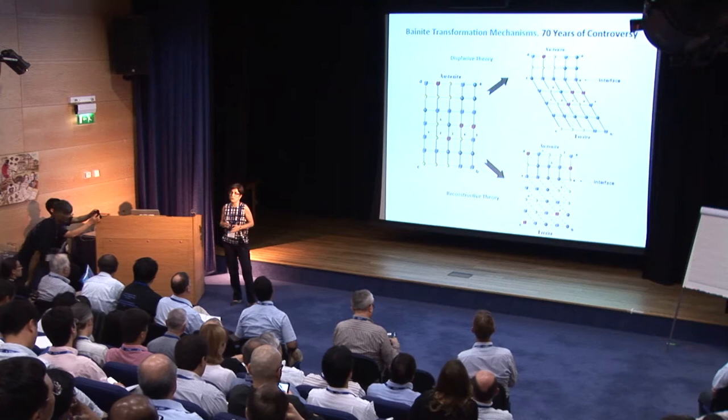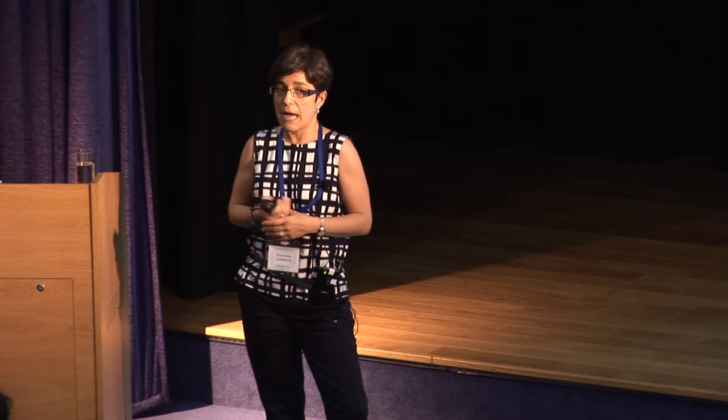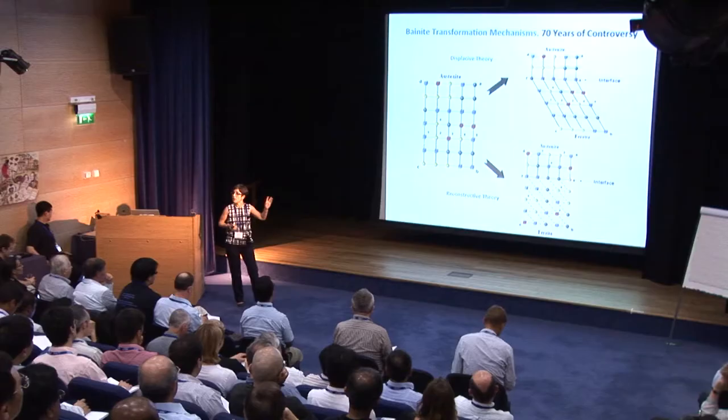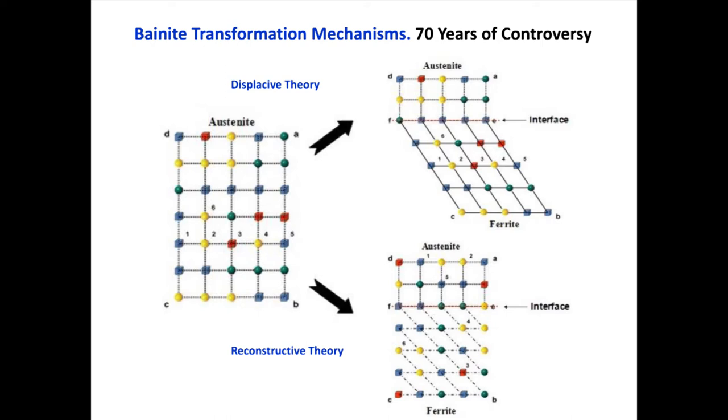Most of you know that since the discovery of bainite, there has been much discussion on the mechanism that controls this transformation. If you check early literature, you can find at least two very different explanations. You can read that bainite transformation is a displacive transformation — stated by nitide ferrite — and that the transformation is essentially martensitic in nature, meaning individual atoms will not move less than one interatomic space during the reaction.